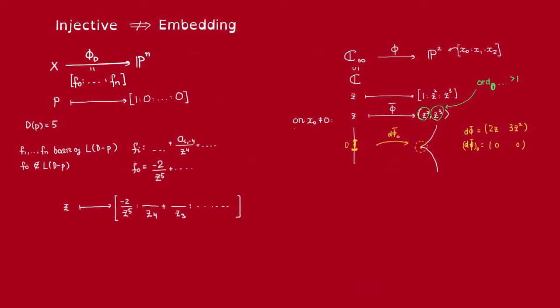Thus, we see that for the map on the tangent space at the origin to be injective, we need that exactly, actually at least, at least one of these coefficients has to have order of vanishing at the origin equal to exactly 1. We need at least one of them. So now let's come back to the general situation and see what it means for us.